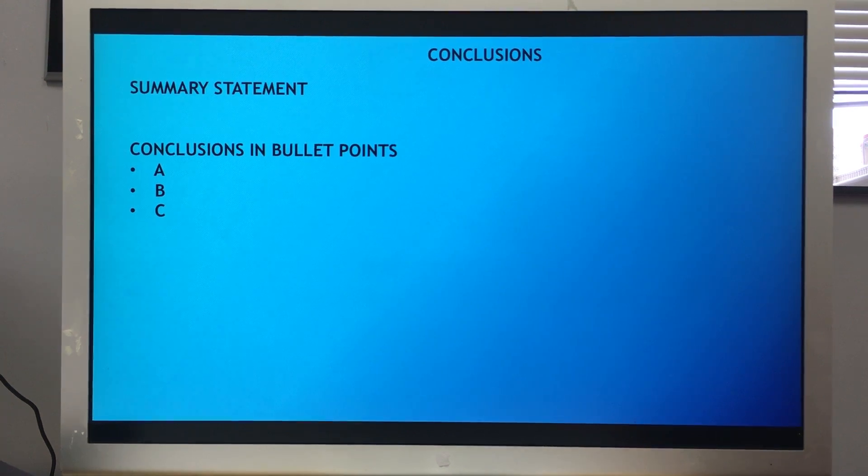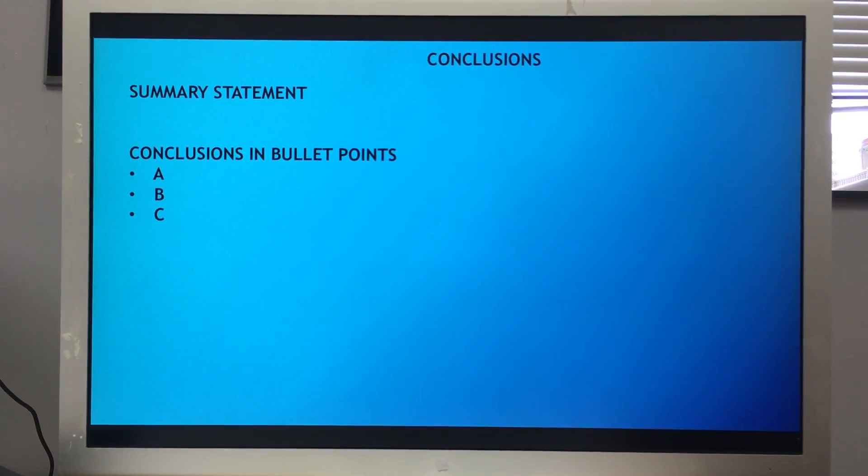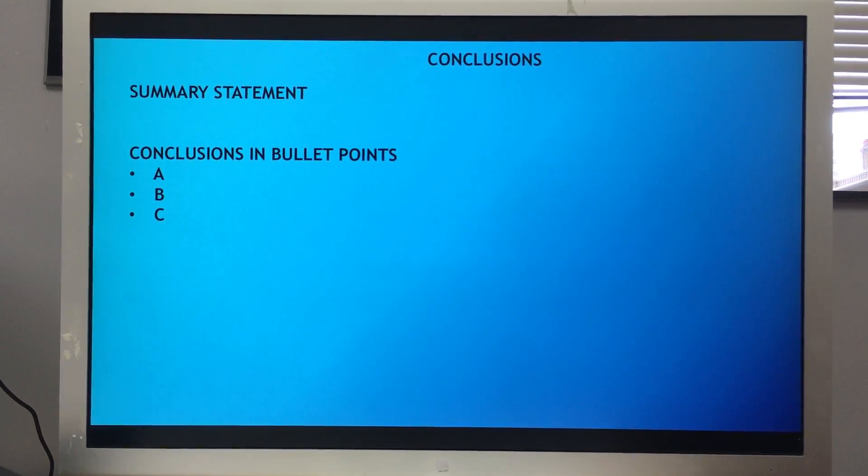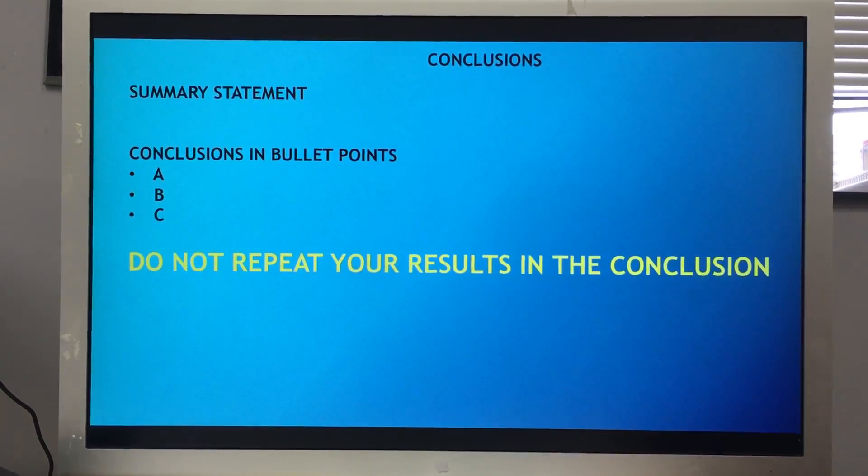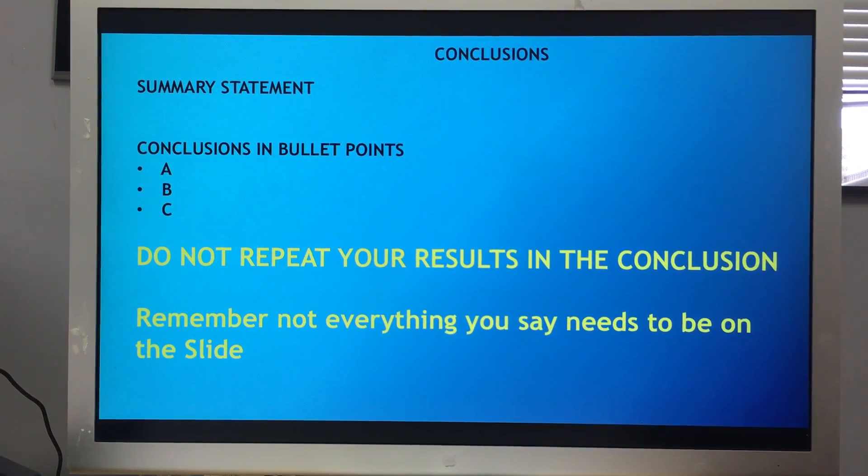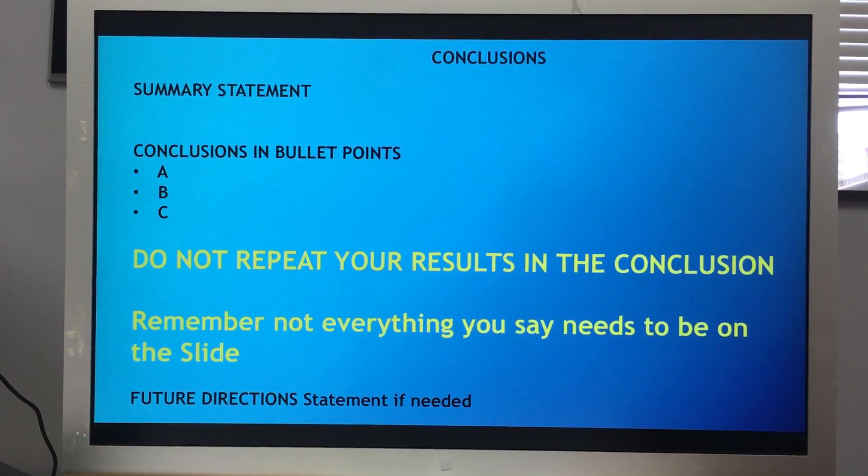This brings us to our conclusion. This is where you have a summary statement, and then your conclusion should be in bullet points—maybe one, two, or three, whatever you want the audience to take away. Do not repeat your results in your conclusion. This is important: remember, not everything you say needs to be on the slides. A future direction statement can be put on here if you want or it's needed.